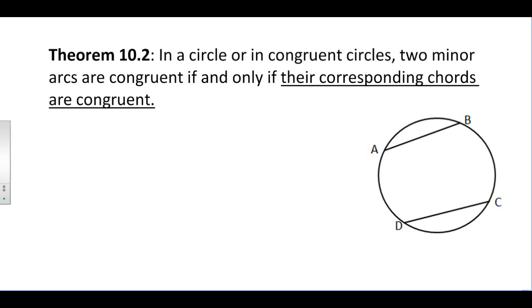What that is saying is in this picture I have a circle. That circle has two chords going through it, chord AB and chord CD, and they create two minor arcs, arc AB and arc CD.